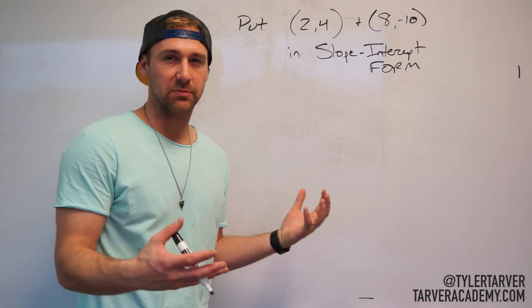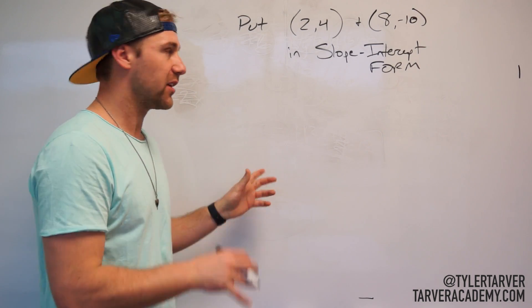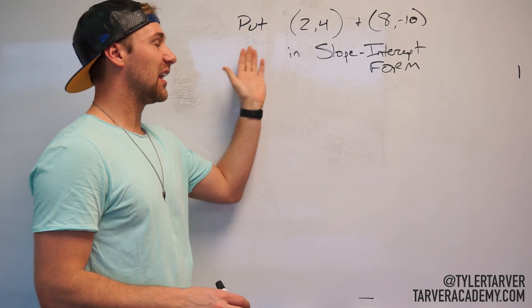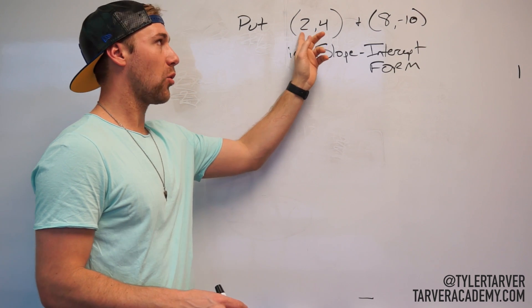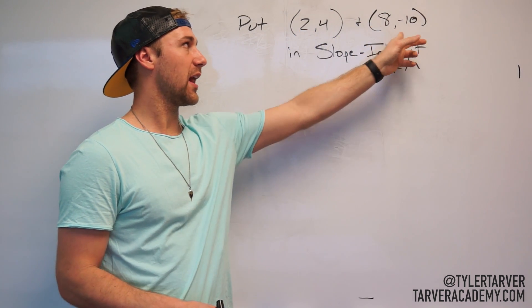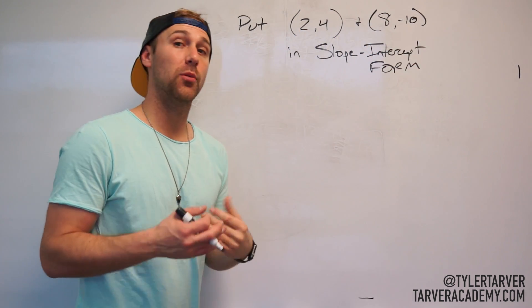Okay, today's problem, I wanted to do a weird one, but I'm going to explain it and then you give it a shot and then I'll explain how to do it. We want to put a line that crosses through the coordinates (2,4) and (8,-10) in slope-intercept form.